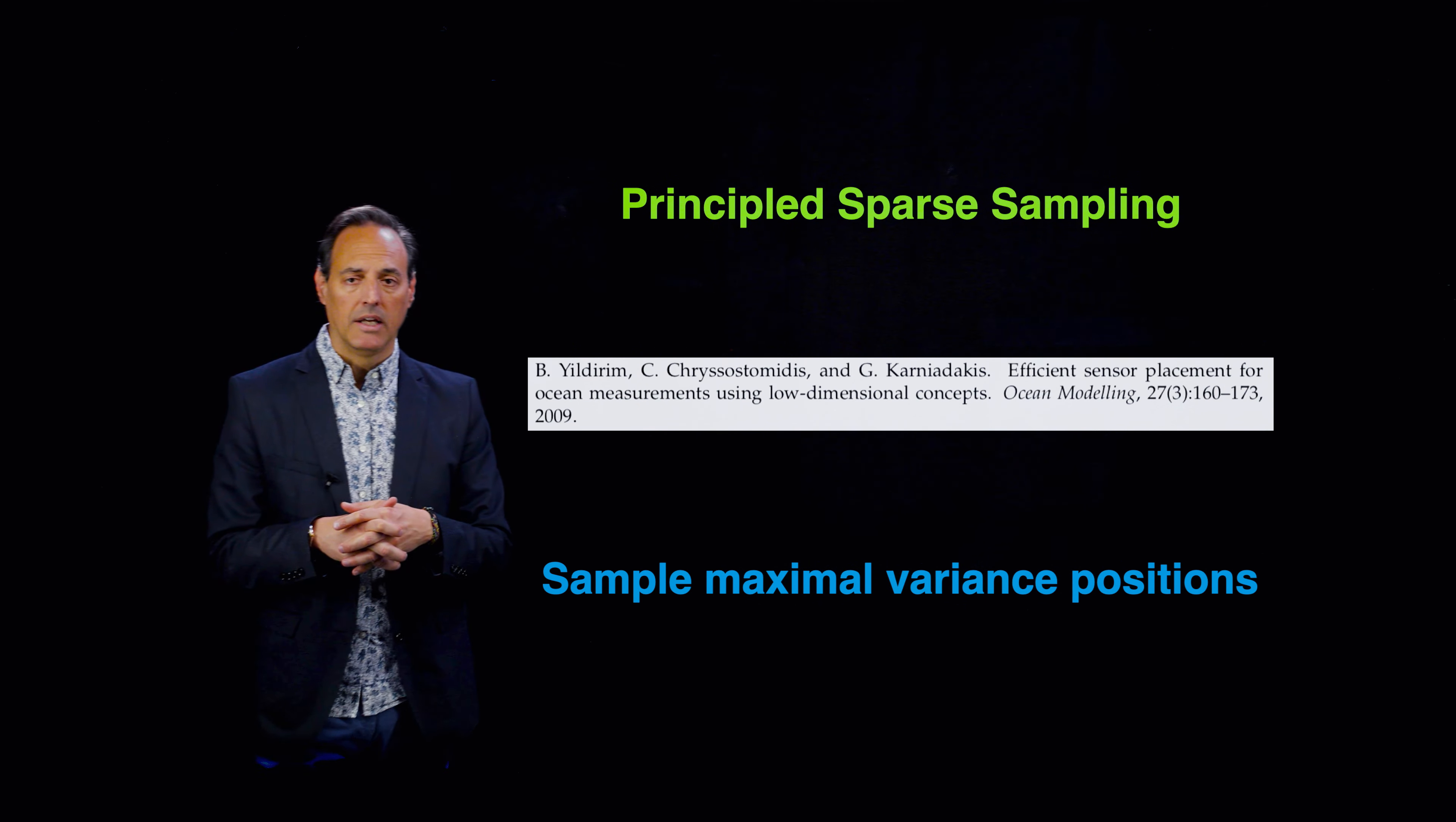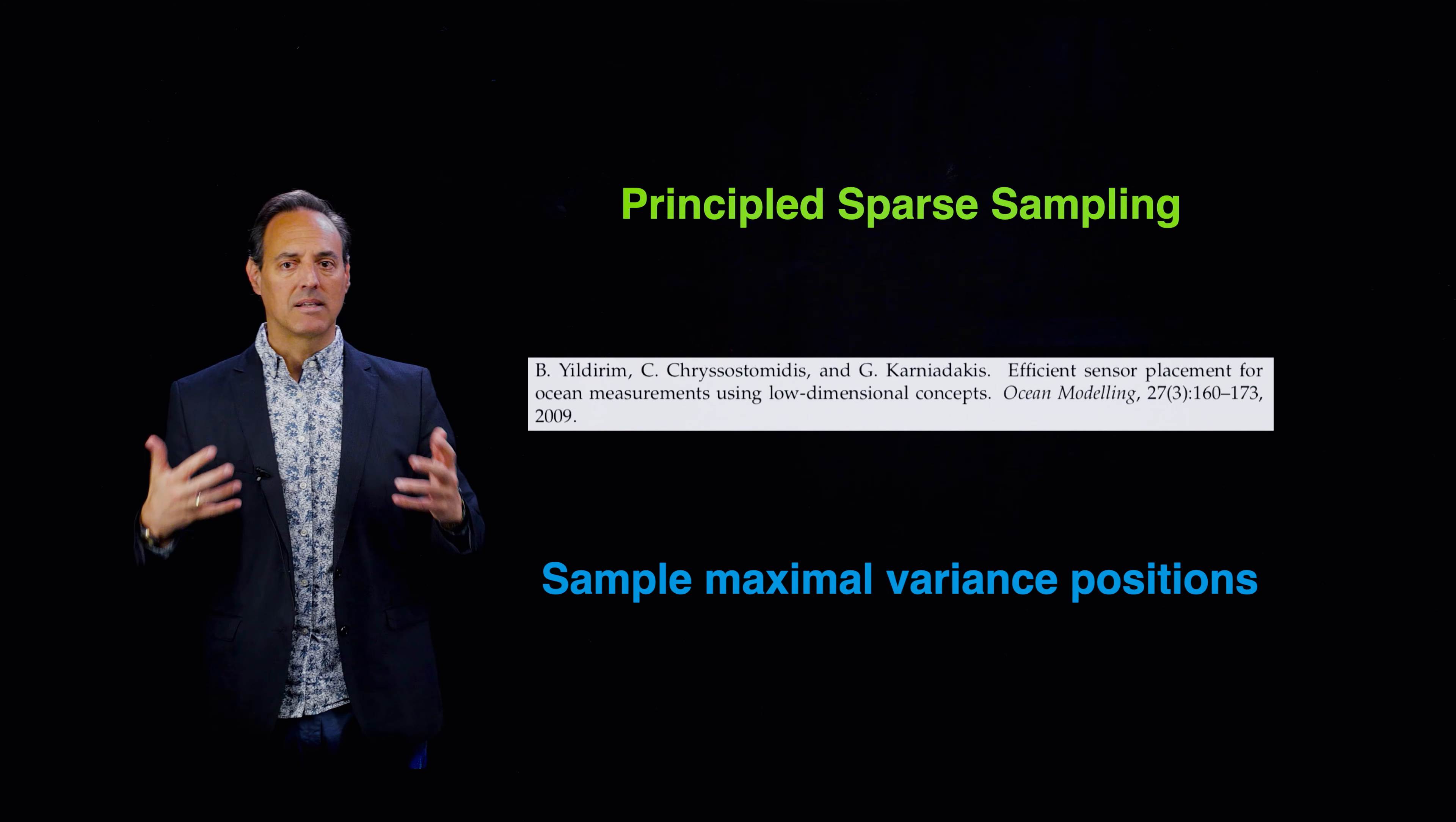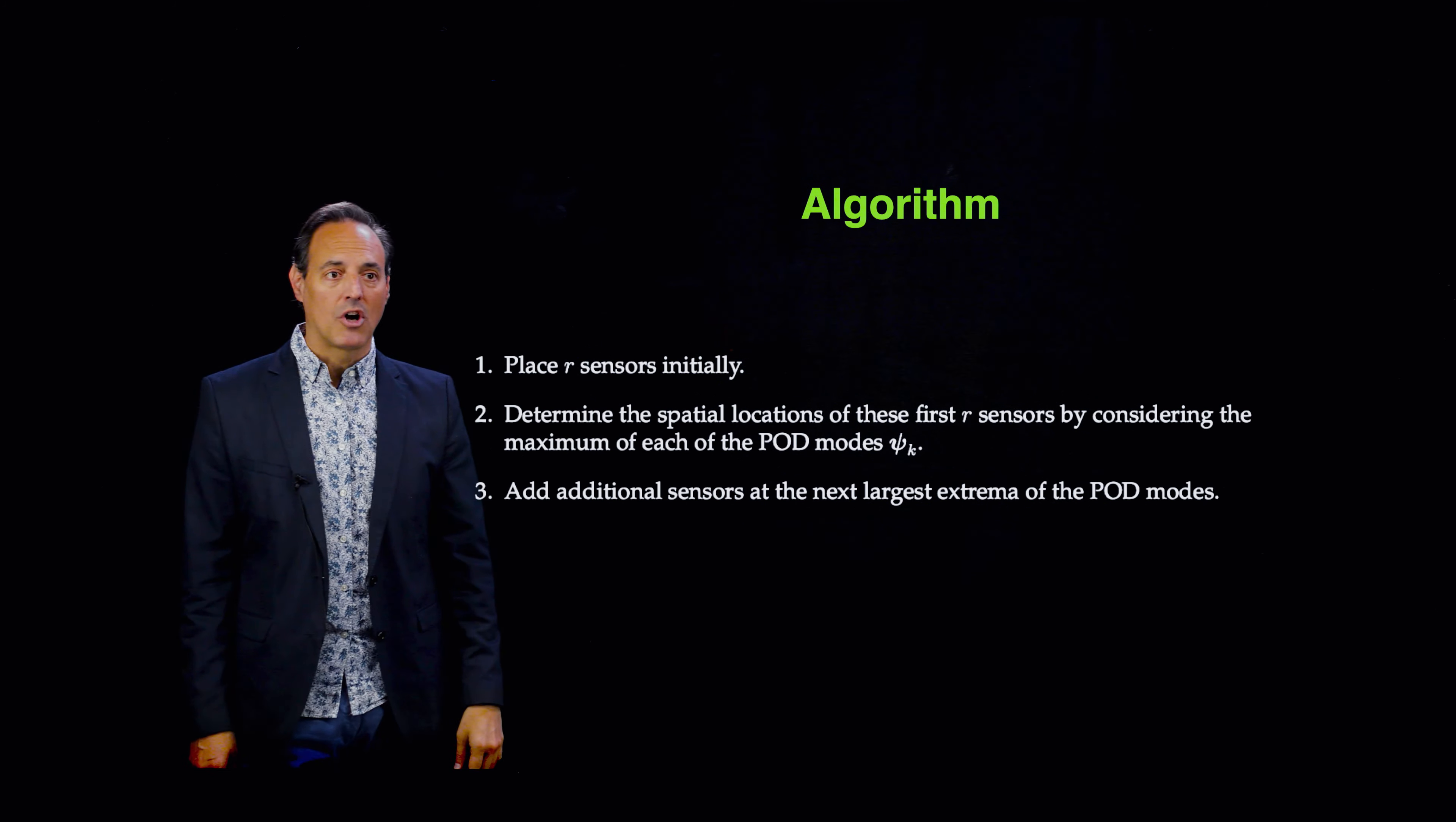I want to talk about the method today developed out of George Karniadakis' group out of Brown. It's a different sampling routine that's principled. They really propose this idea of sampling the maximum variance of the positions. In other words, you look at your SVD modes and you start thinking about where are they maximum and minimum. That's what's telling you something about the maximum variance and use those as potential interpolation points.